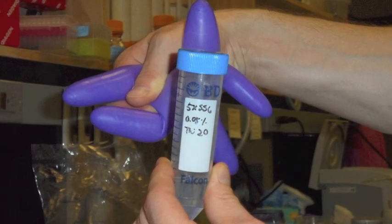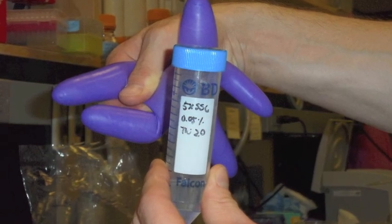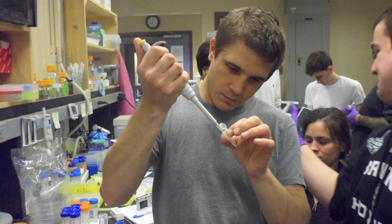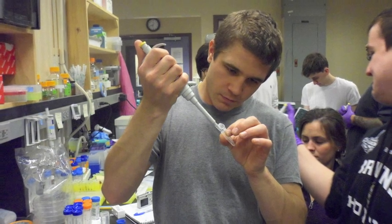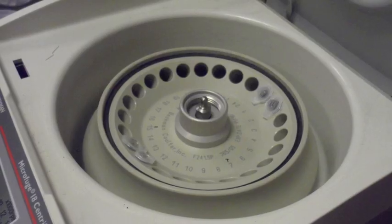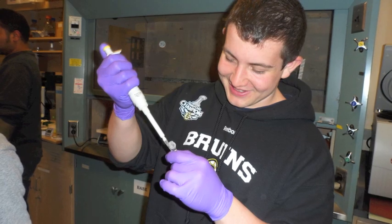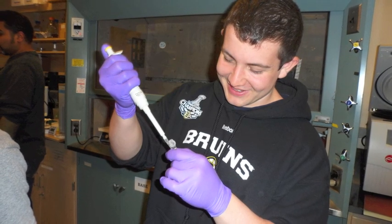Next, using 5X SSC, a standard sodium citrate buffer, wash the microparticle solutions three times. This removes unbound DNA. Remove the supernatant by centrifuging in between washings, being sure to lose as few microparticles as possible.